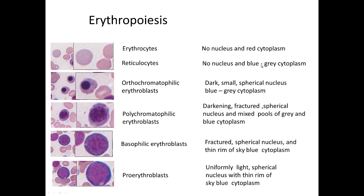The reticulocyte is the cell actually released from the bone marrow. It has no nucleus but has a blue-gray cytoplasm. Younger than that is the orthochromatic erythroblast, whose cytoplasm is very similar to the reticulocyte, but it has a dark spherical nucleus that will ultimately be removed.